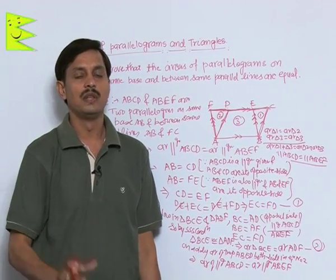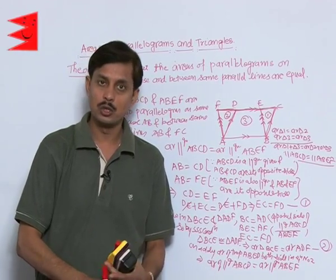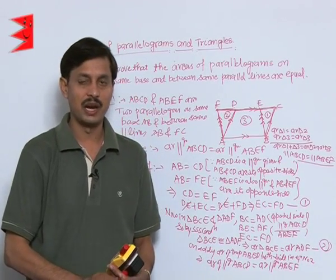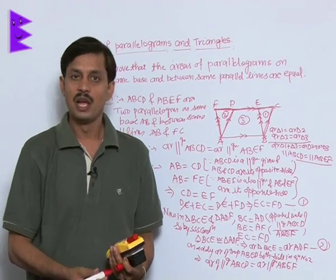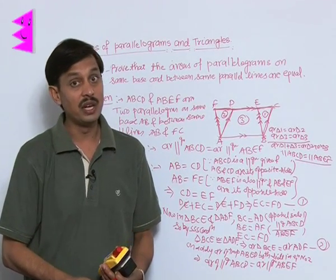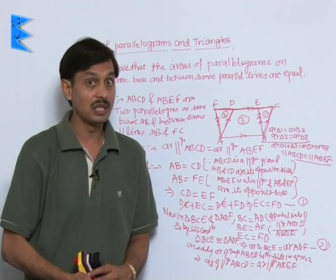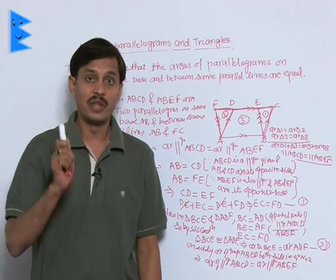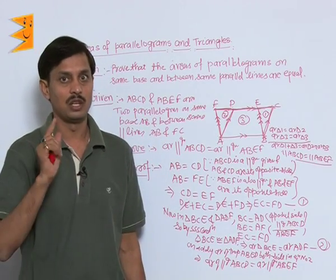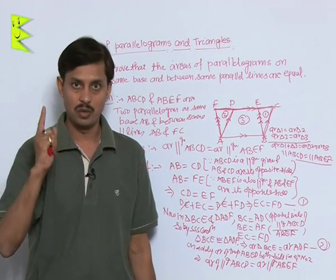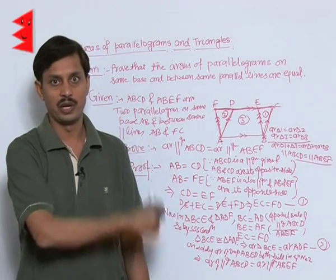The conclusion is: when two parallelograms are on the same base and between the same parallel lines, their areas are equal. Since every rectangle, every square, and every rhombus is also a parallelogram, this property is equally applicable in the case of rectangles, squares, and rhombuses.